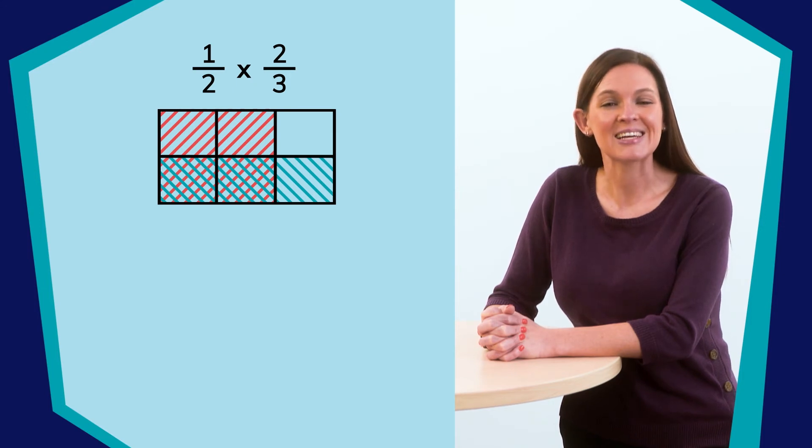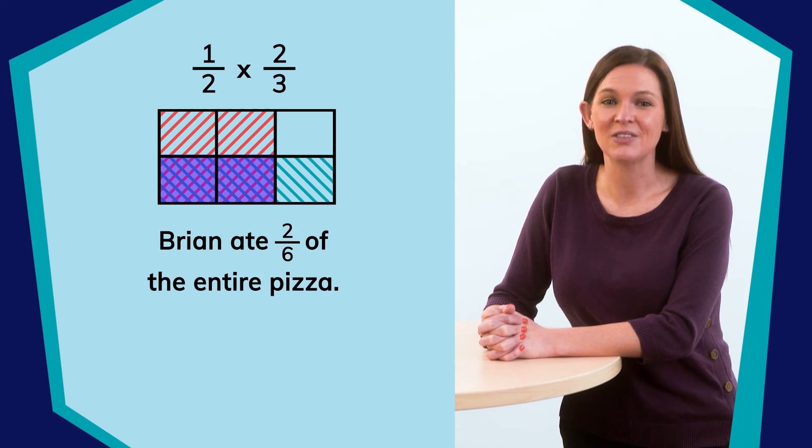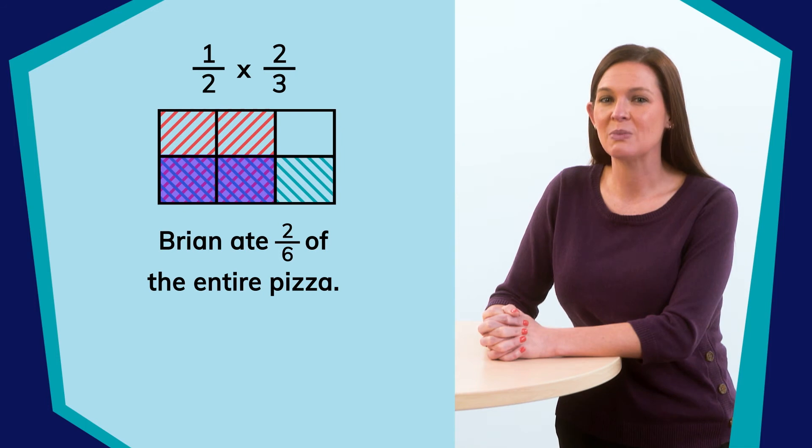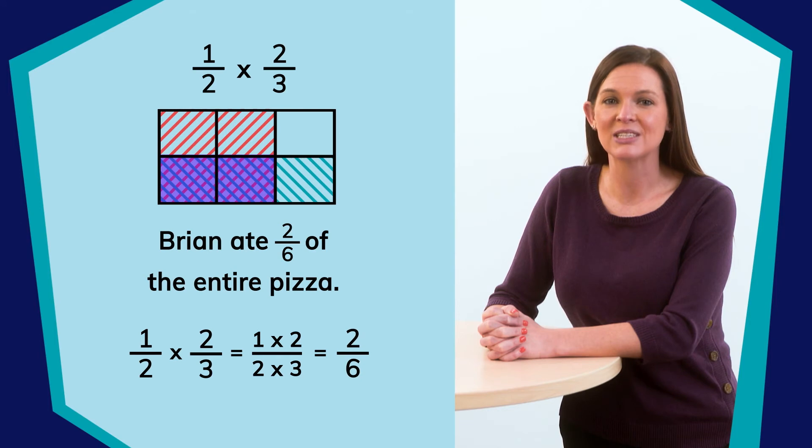Yes, six. How many of those pieces are shaded by both one-half and two-thirds? Yes, two. So, Brian ate two-sixths of the entire pizza. How could we rewrite the equation to make multiplying easier? Perfect. We could write one times two over two times three. And when we multiply, we find that the answer is the same as our model. Good work.